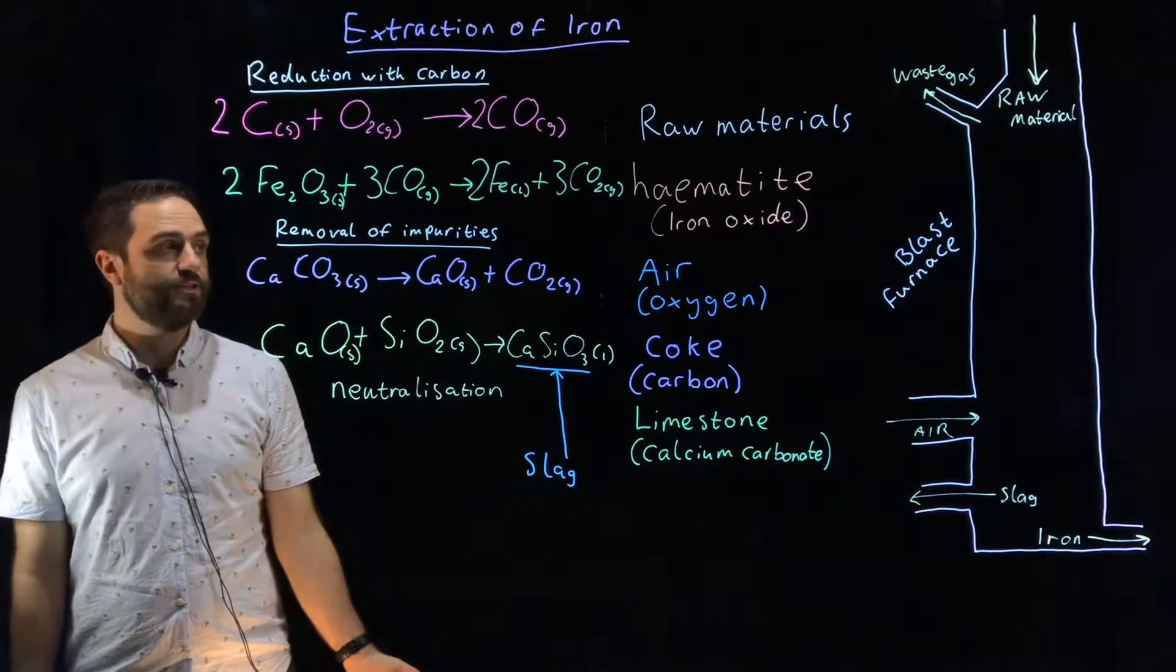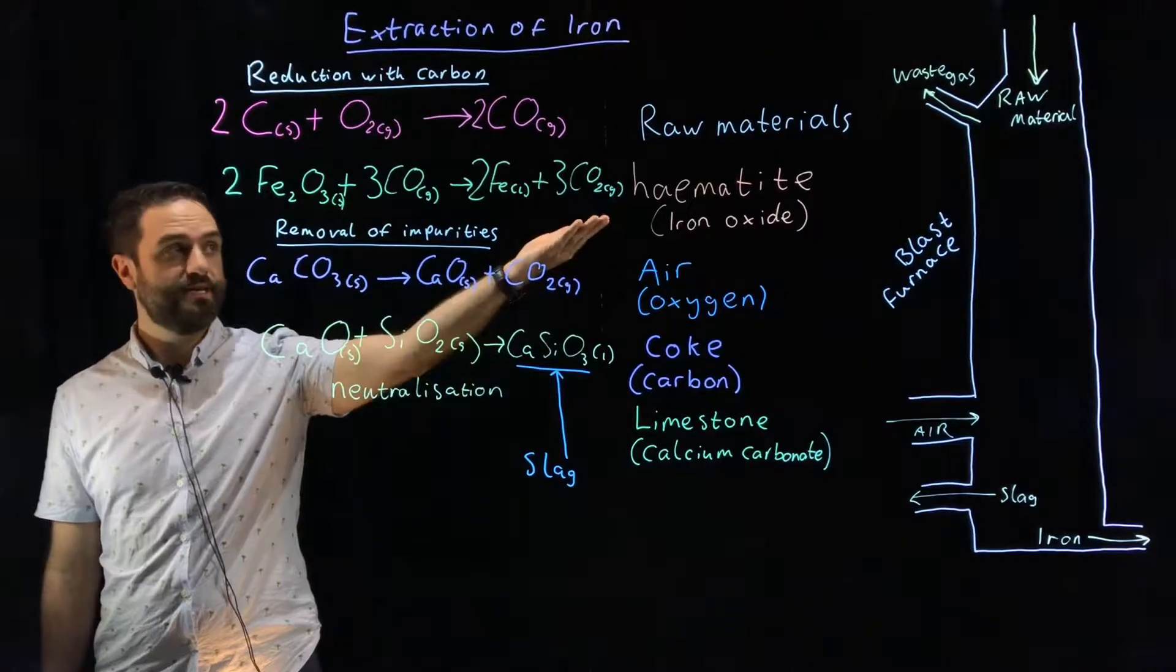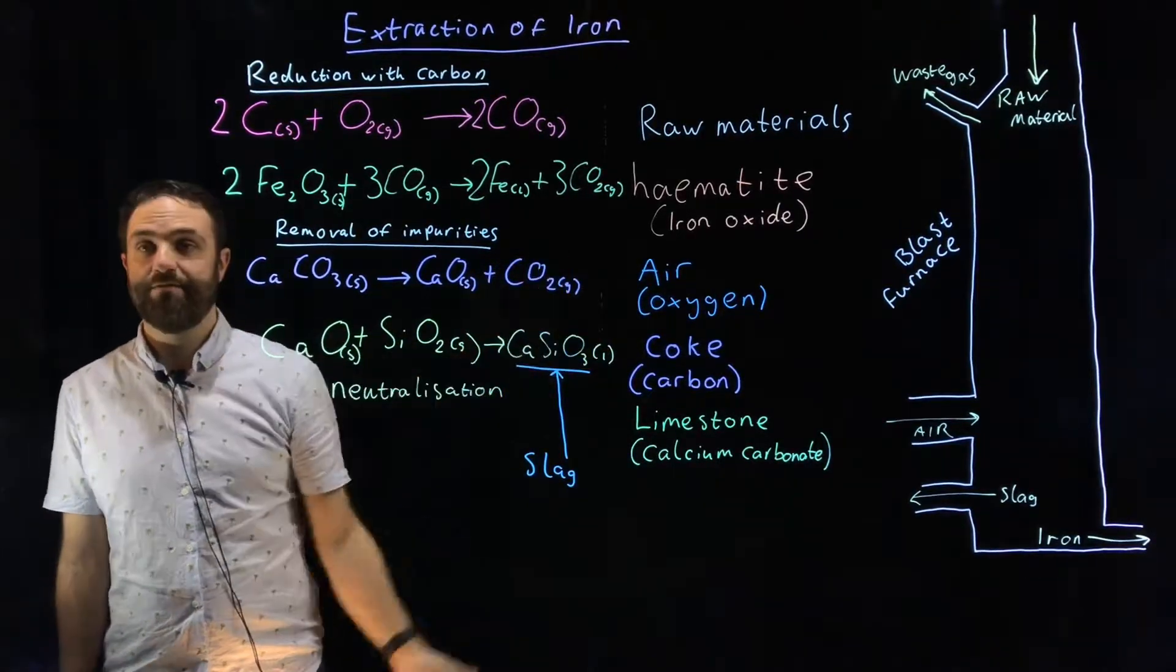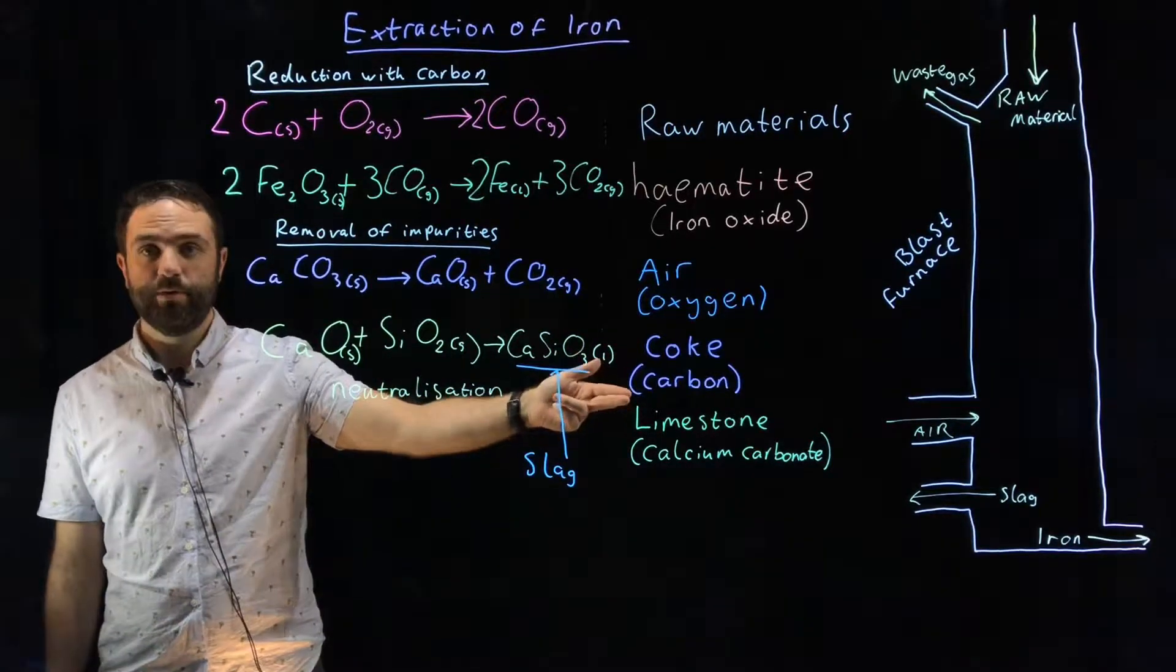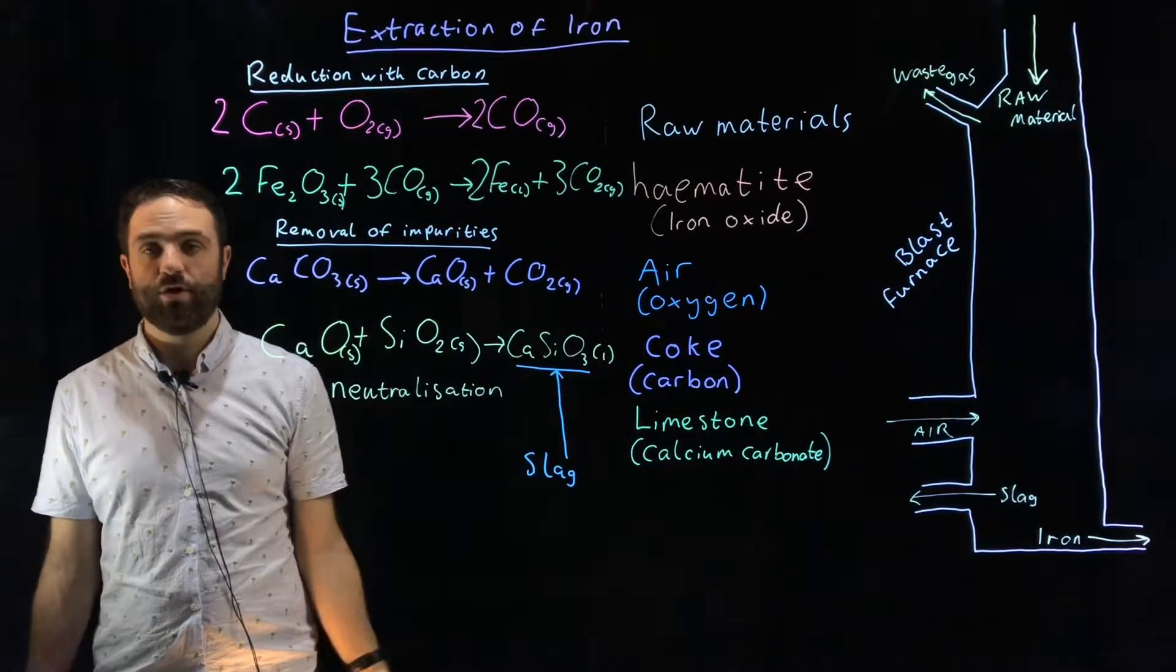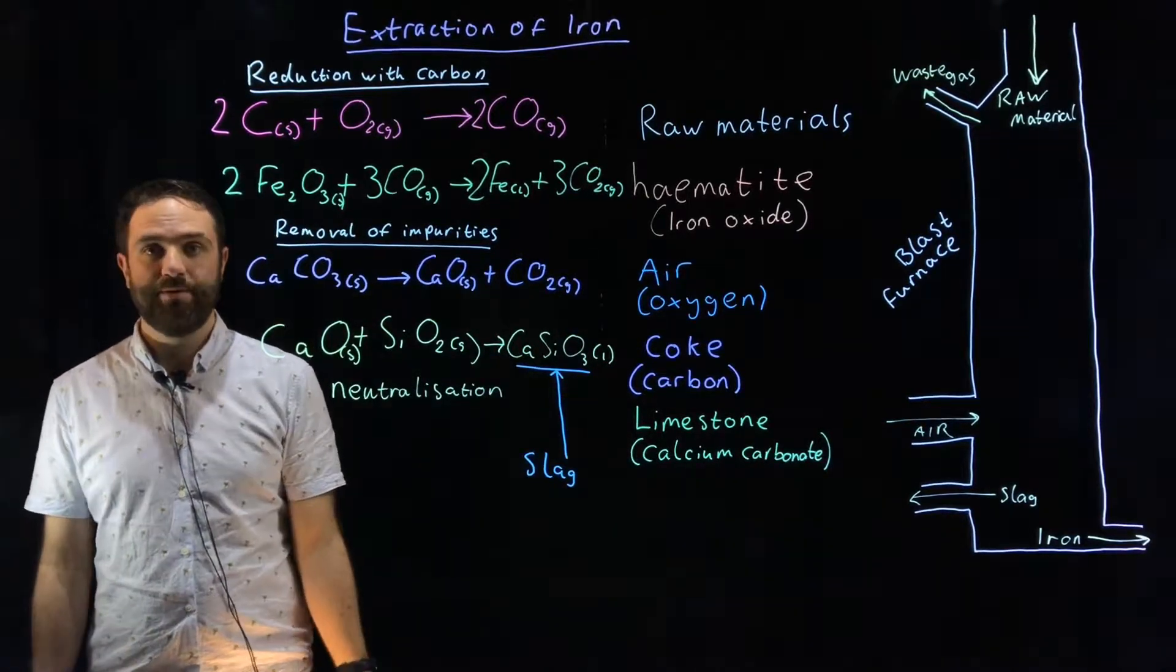So what raw materials do we need? Well we've got our hematite which is just dug out of the ground. We also need oxygen which we get from the air. We use carbon which is our reducing agent in this case. That's in the form of coke which is elemental carbon from coal mines.